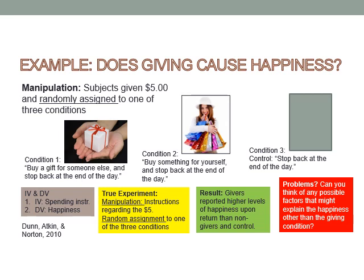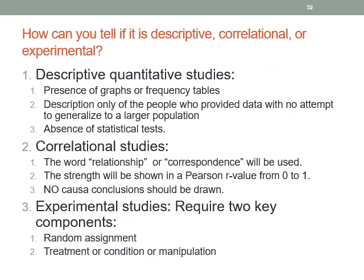The big thing for this week is being able to tell if a study is descriptive, correlational, or experimental. For descriptive quantitative studies: look for graphs and frequency tables, data only for the people who provided data, no attempt to generalize, and no statistical tests. For correlational studies: look for the word 'relationship' or 'correspondence,' a Pearson R value from 0 to 1, and no causal conclusions drawn. For experimental studies: look for random assignment and a treatment, condition, or manipulation — the researcher has to do something to the participants.